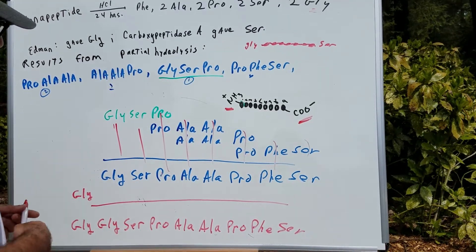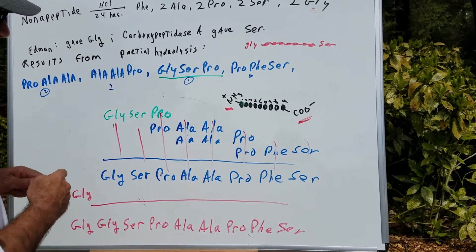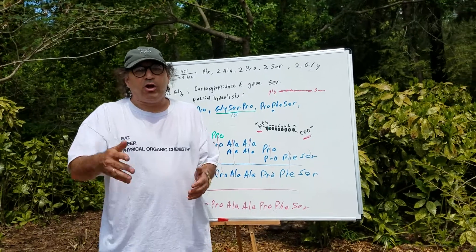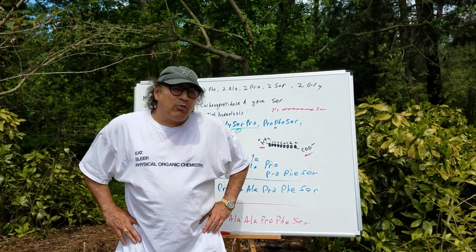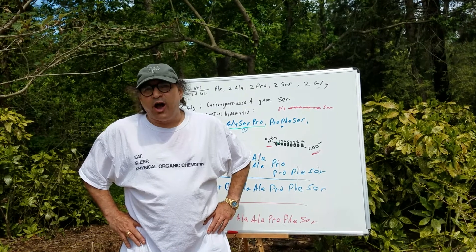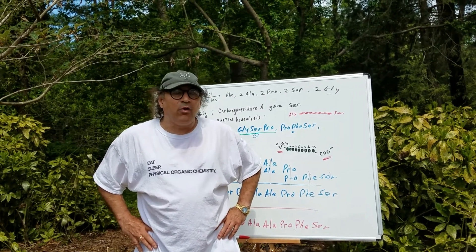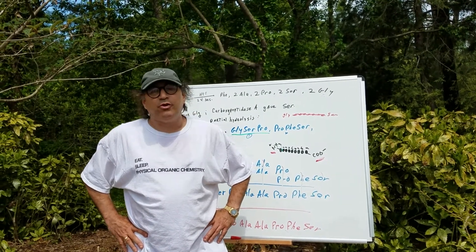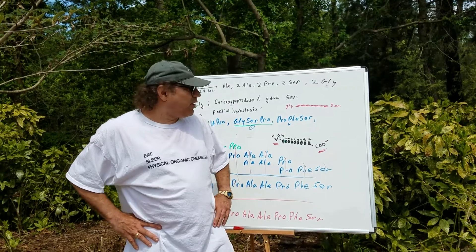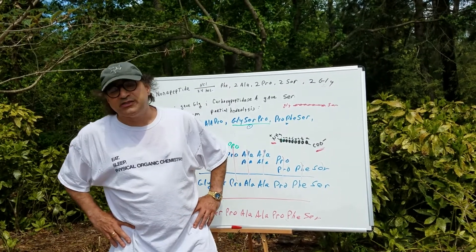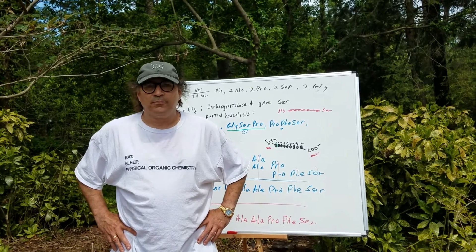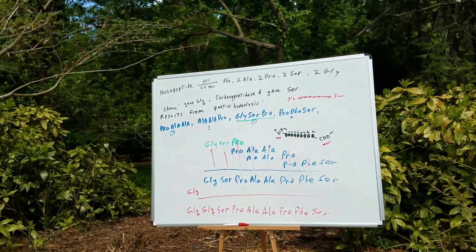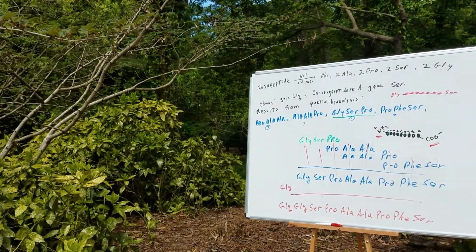So therefore, we get Gly-Gly-Ser-Pro-Ala-Ala-Pro-Phe-Ser for our nona peptide. It's a really easy problem and they're fun — they're called overlapping peptides. You may see this at the end of organic chemistry, the beginning of biochemistry, or if you have a teacher who does a little of both, you might catch it in each of the sections. It's a really cool problem. I hope this helps — it's a really fun question. Thanks, Dr. Romano. You made it so easy to understand. All right, get back to work. Good day to you.